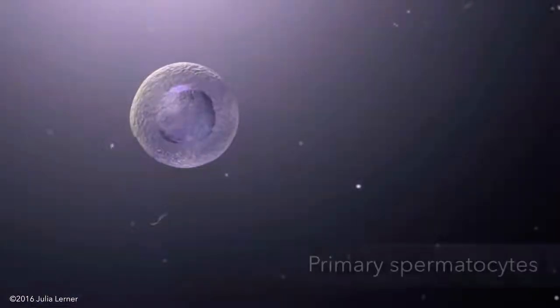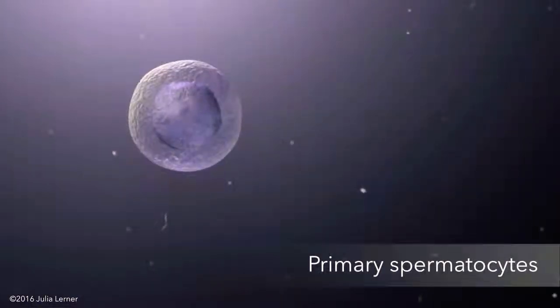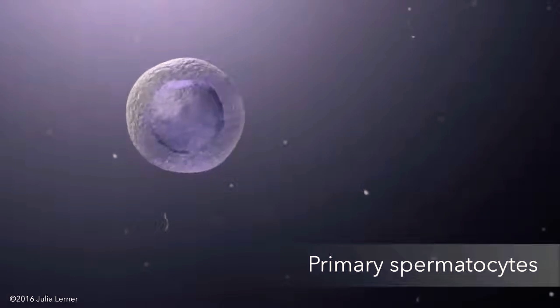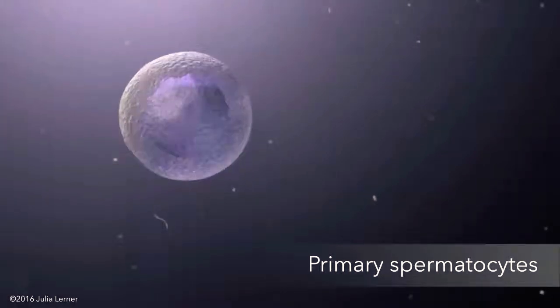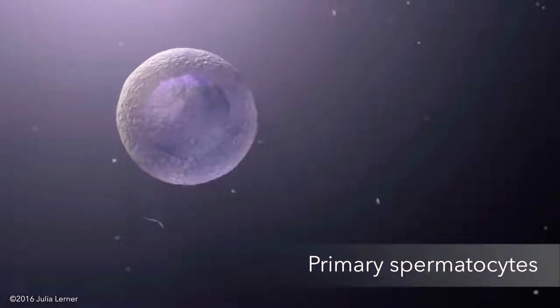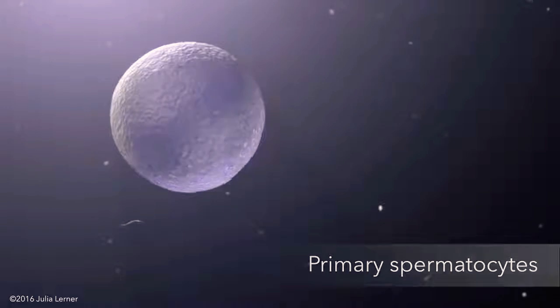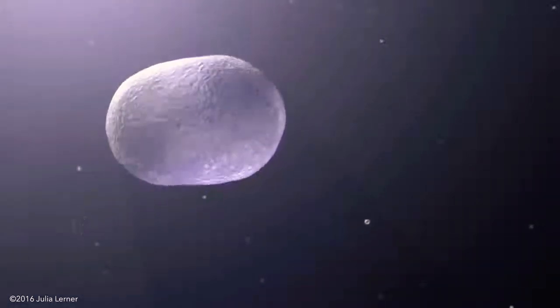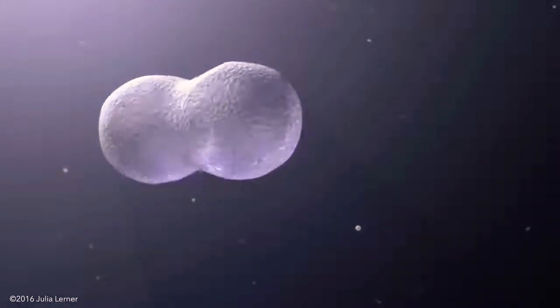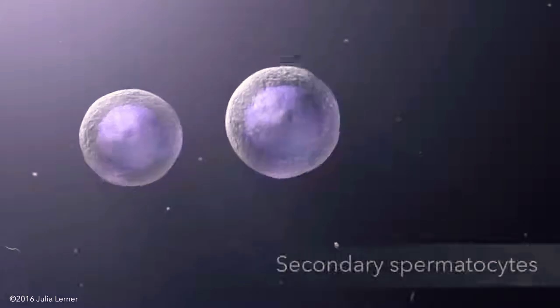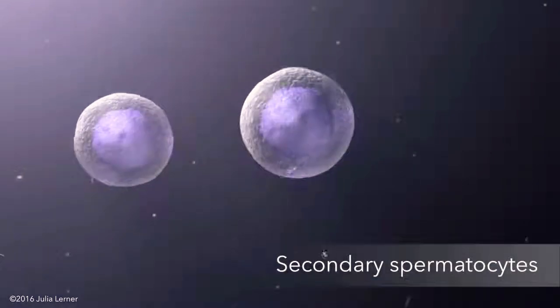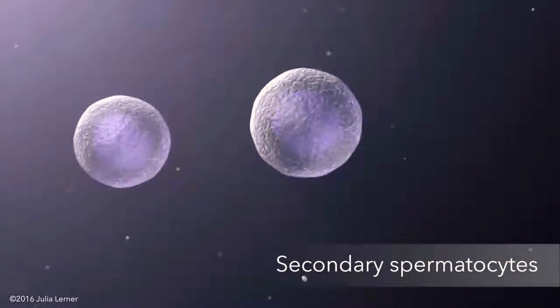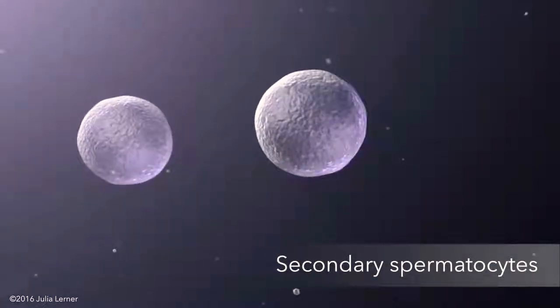The cells grow gradually into primary spermatocytes, preparing to divide into cells half their size. Each of these primary spermatocytes undergoes a first meiotic division, forming two smaller haploid cells known as secondary spermatocytes.